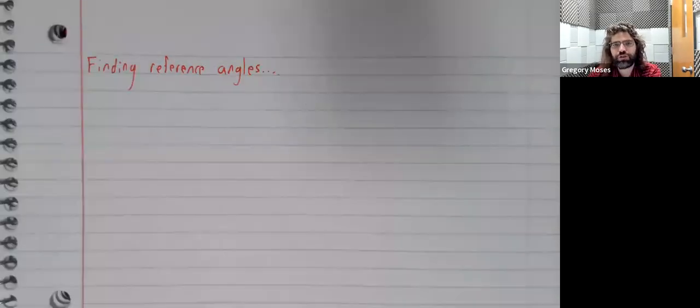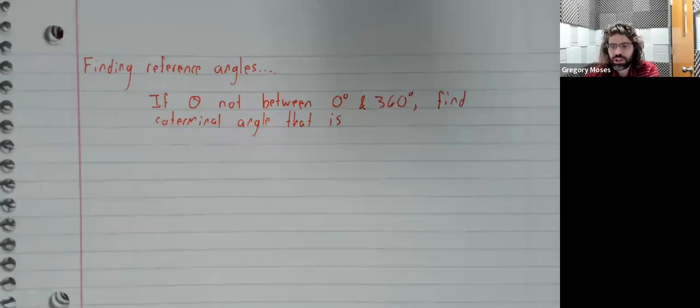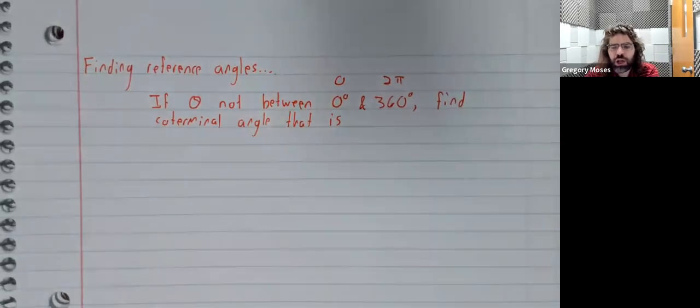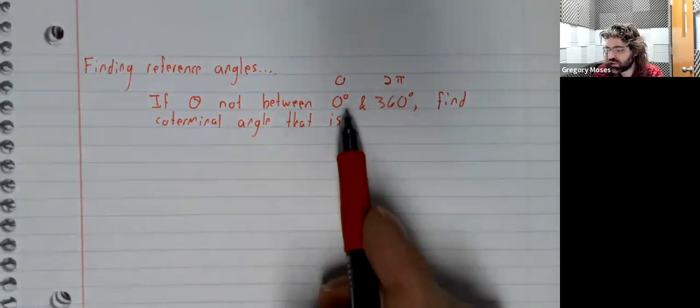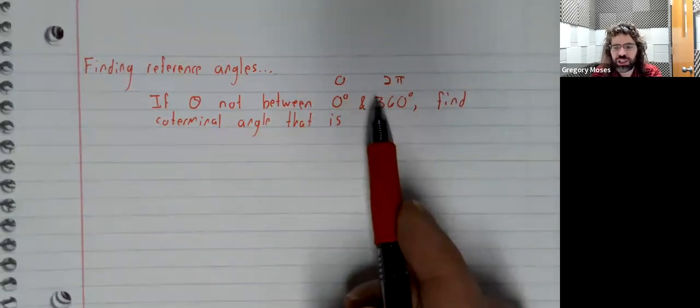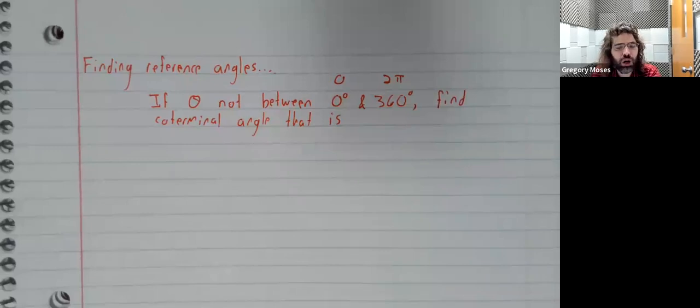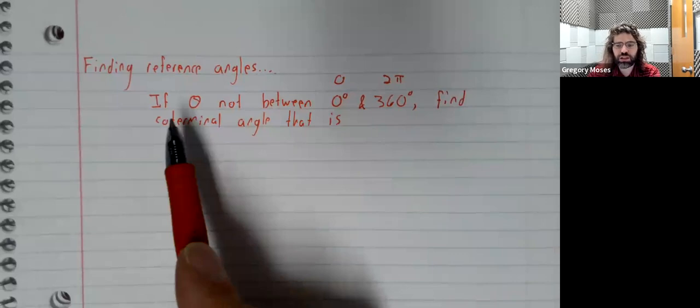So, let's talk about finding reference angles. This first step, I don't think the textbook mentions, but if theta is not between 0 and 360 degrees, that's 0 and 2π radians, we should find a coterminal angle that is, and you should review that material if you don't remember how to do this. So, the textbook assumes we're going to be looking at angles between 0 and 360 degrees, but this works with any angle. You just have to start by finding a coterminal angle that is between these values.